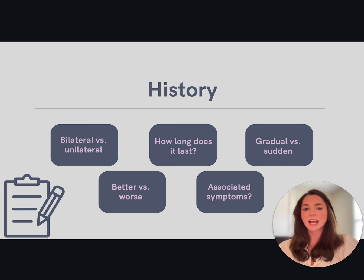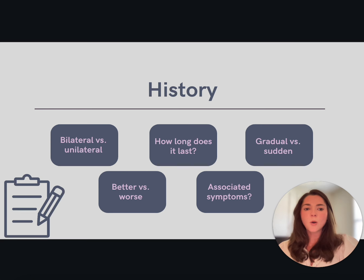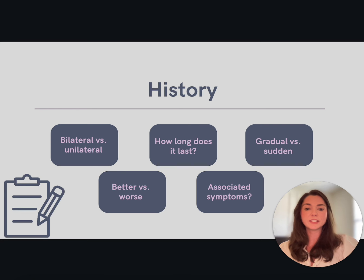So how do we determine the type of headache? This is where a great patient history will help. We want to know: is the headache bilateral or unilateral? How long does the headache last? Does the headache appear gradually or suddenly? What are the alleviating and aggravating factors? And are there any associated symptoms like nausea, vomiting, photophobia, eye tearing, or change in vision? The answers to these questions can either help reassure you that you're dealing with a primary headache or give you a clue to consider another more serious origin.